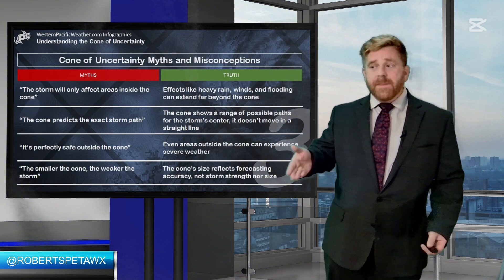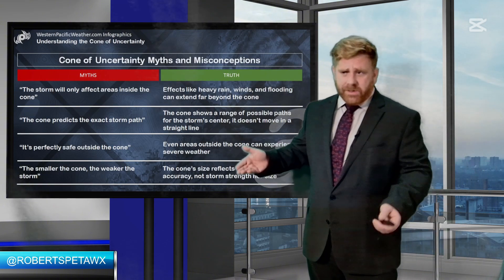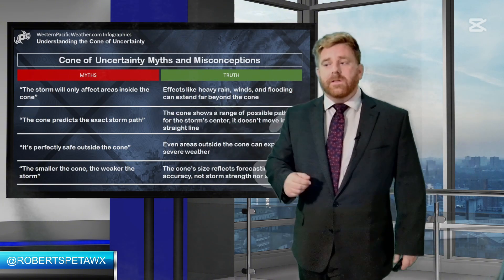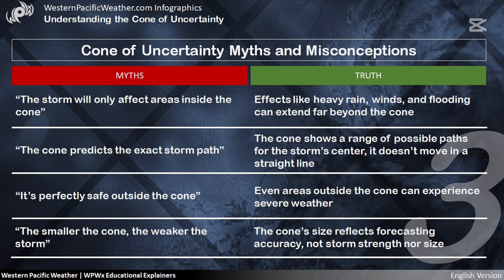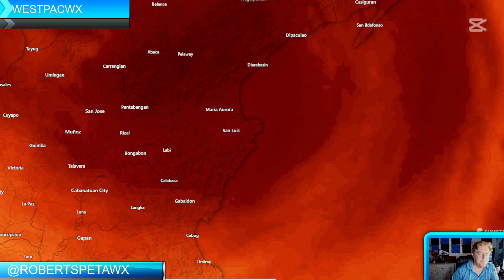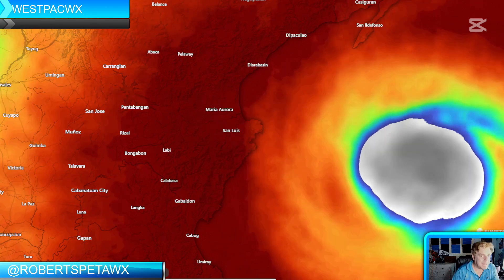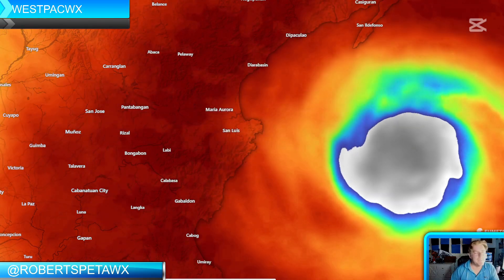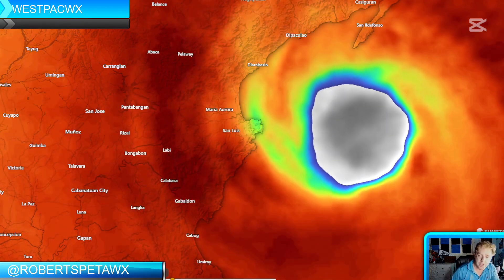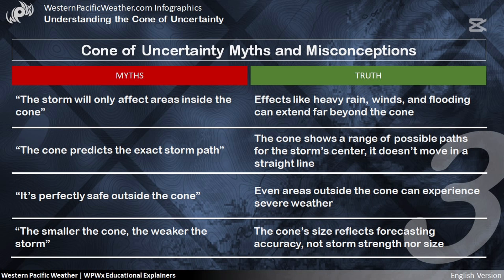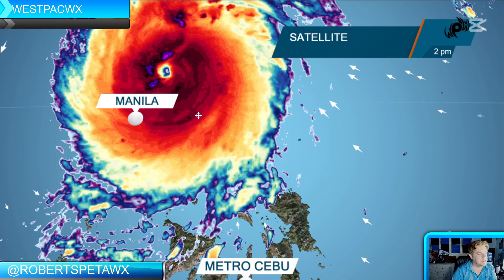Let's talk about some myths and truths. Myth: the storm will only affect the areas inside the cone — it will not. Myth: the cone predicts the exact path of the storm — they try, but it can change and waver within that cone of uncertainty. Myth: it's perfectly safe outside the cone — no, the impacts can extend well away from it.